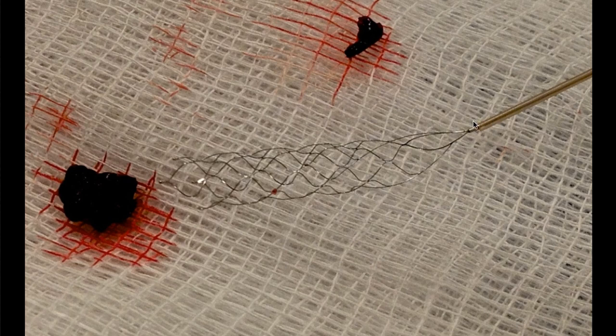So let's go over what we're looking at here. Here's the micro catheter. Here is the stent, the retrievable stent. And here is the blood clot that was blocking this patient's brain artery.